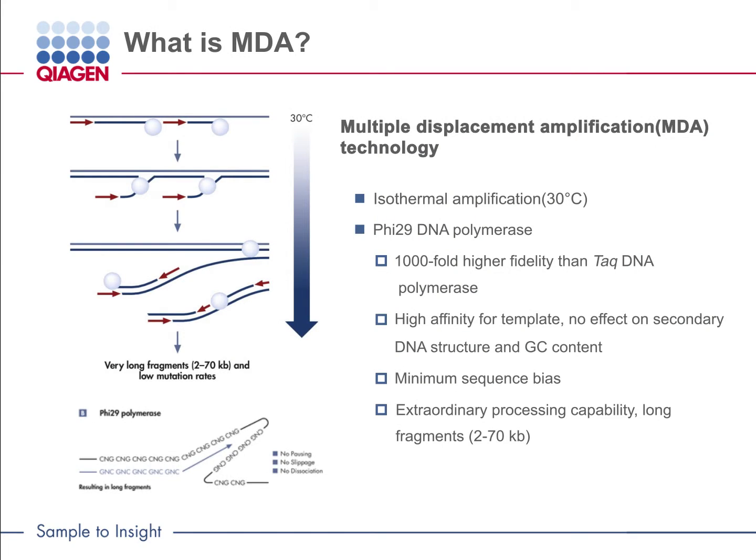During PCR, DNA templates undergo a number of cycles including heating steps at 95 degrees Celsius for denaturation. Repeated exposure to high temperatures leads to DNA damage, depurination, and strand breakage. This will result in amplification bias that will affect sequencing results.